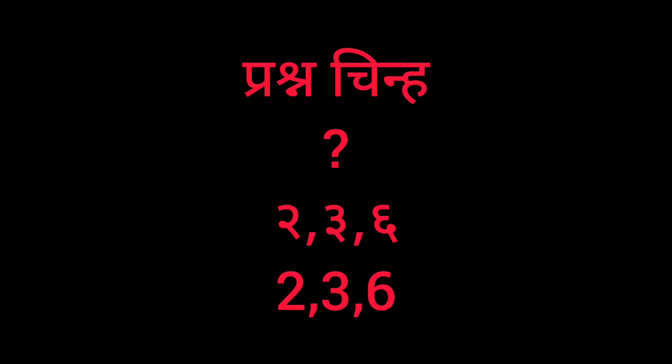Then Udhgarchen means exclamation mark, and the exclamation mark dot is dot 2-3-5. Then Prashnchen means question mark, and the question mark dot is dot 2-3-6. Next is Vissarg, which means colon. The colon dot is dot 2-5.